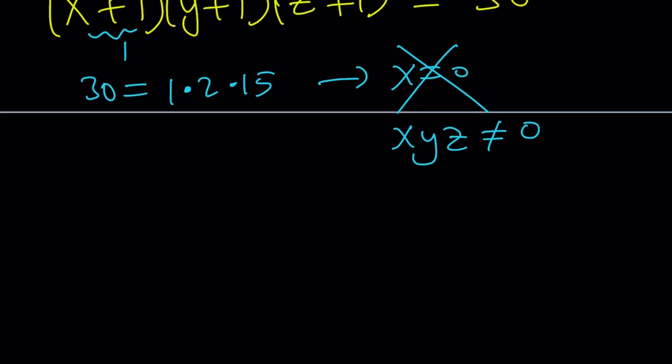So, how do you factor 30 into the product of three integers that are all greater than or equal to 2? And there's actually only one way to do it. And that's called prime factorization.